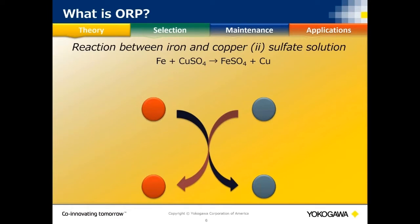ORP, also known as oxidation reduction potential or redox, involves two reactions happening simultaneously. There's an oxidation reaction where something gives up electrons, and a reduction reaction where something takes those electrons — one cannot happen without the other. There's an acronym to help remember it: OIL RIG — Oxidation Is Loss, Reduction Is Gain.